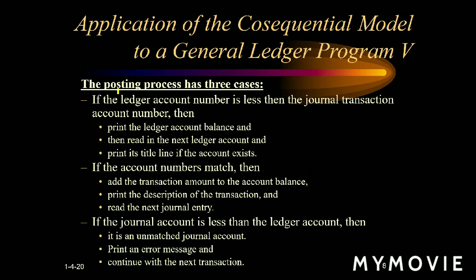When doing posting, as already explained, posting is the process of sending transaction details from the journal file to the ledger file. These are the main conditions to handle. The first one is: if the ledger account number is less than the journal account number, we first print the ledger account balance, then read the next ledger account and print those details. If the account number is equal — that is, the ledger account matches the journal transaction — that is a match case. In that case we add the transaction amount to the account balance, print the transaction, and then read the next journal entry.